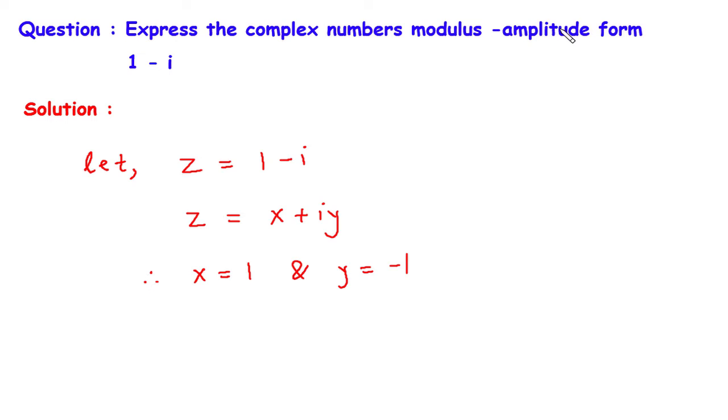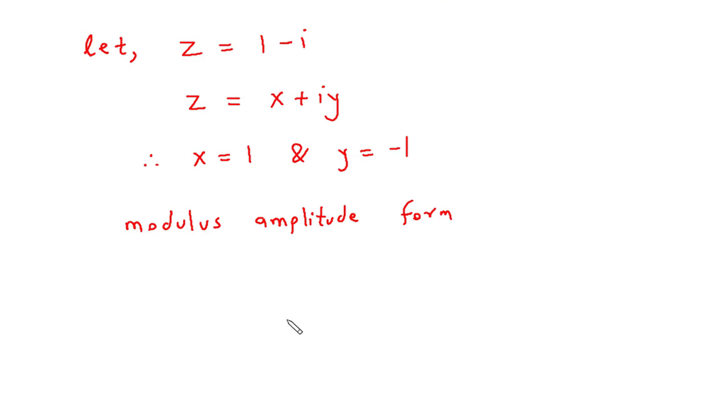Now we have to find modulus amplitude form. The modulus amplitude form will be z equals magnitude of z times cosine theta plus i sine theta. We have to find this magnitude of z and the value of theta. From this we will get the modulus amplitude form of 1 minus i.